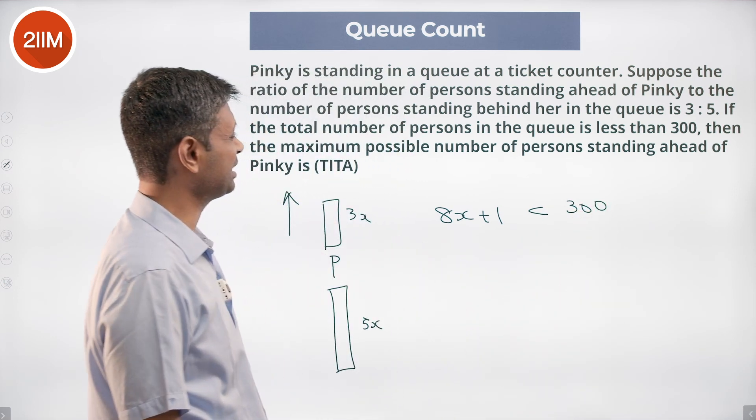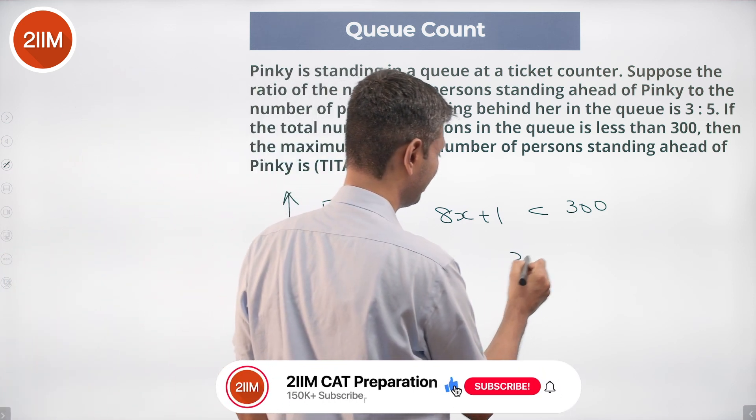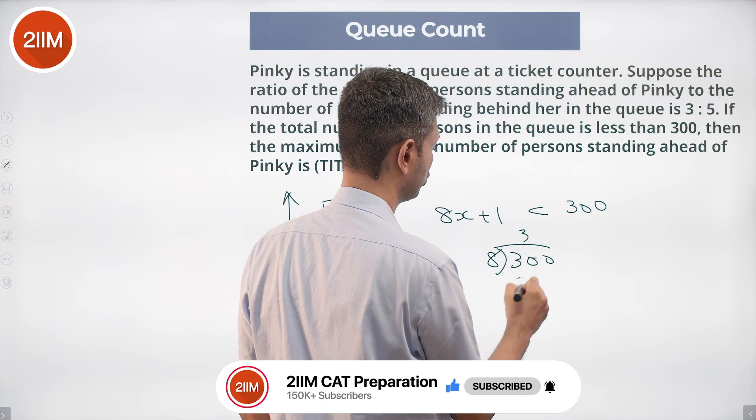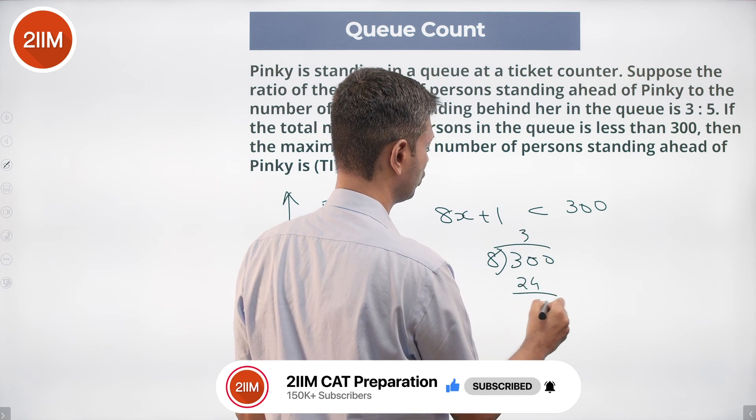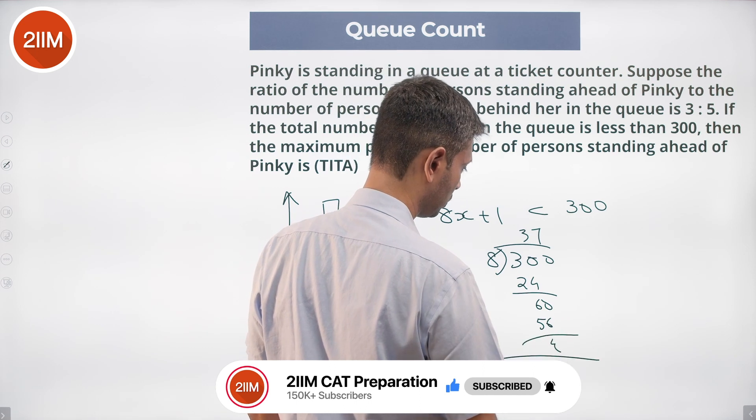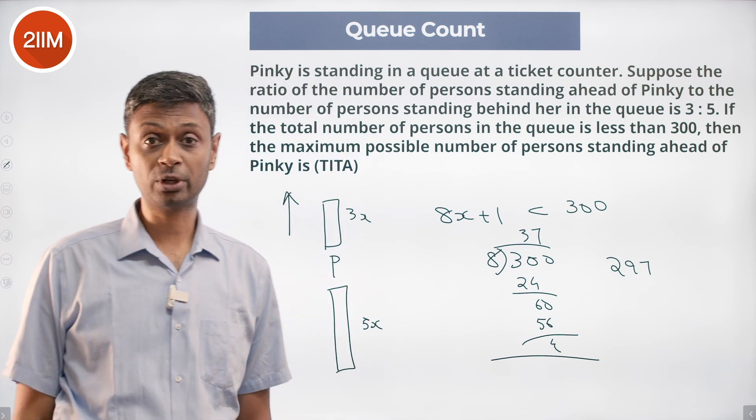What are the maximum possible number of persons standing ahead of Pinky? Very regular question. 300 divided by 8: 13 goes 3 times, 24, 60, 7 times 56. So we could have 297 people, the maximum, which is of the form 8x plus 1.